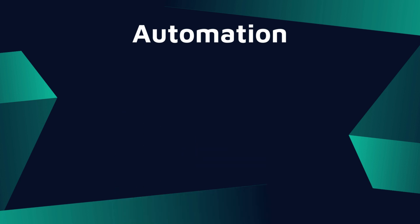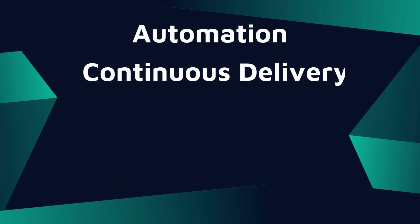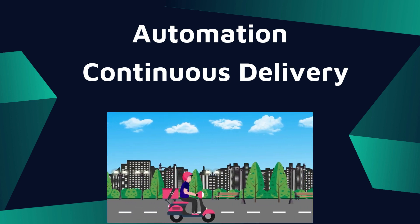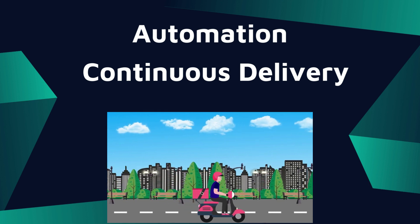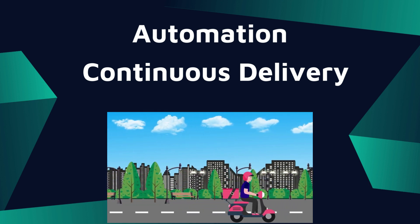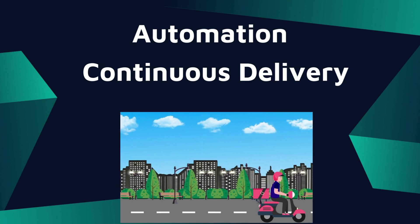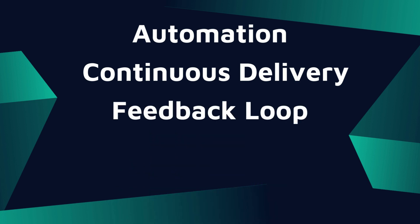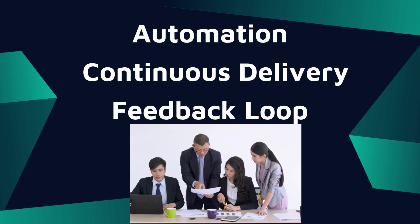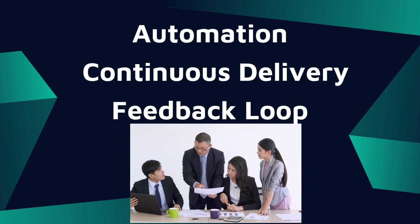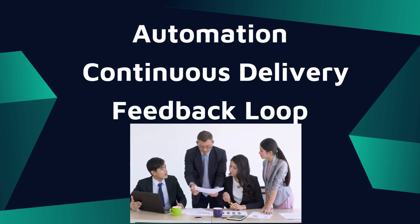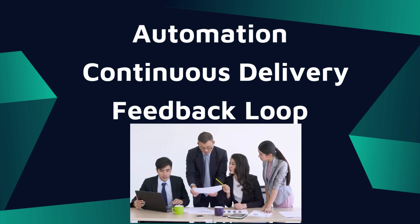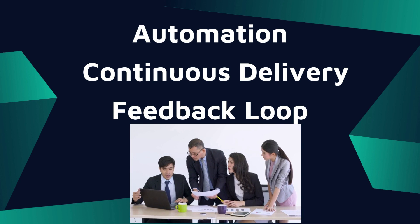The next principle is Continuous Delivery. Continuous delivery allows teams to release software updates quickly, safely, and frequently, so we can get updated versions into the market or production very soon. The next key principle is Feedback Loop. Effective software with high quality depends on this principle — feedback loops provide teams the opportunity to continuously refine their processes, learn from mistakes, and improve the overall experience for customers.